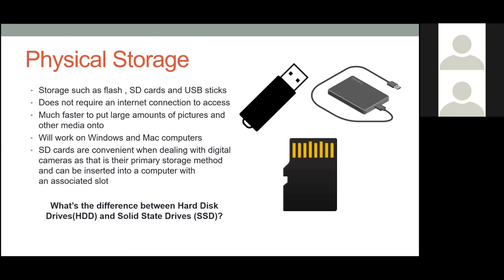Another alternative, and one that everyone is a little more familiar with, is physical storage — like flash cards for your camera, SD cards, USB sticks, stuff like that. It doesn't require an internet connection to access. If you have a big photo library, it's much faster to just transfer all those pictures onto one of these devices. They'll work on any computer, and SD cards are convenient if you're familiar with digital cameras, since they use SD cards to store photos — you just take it out and plug it into the computer.